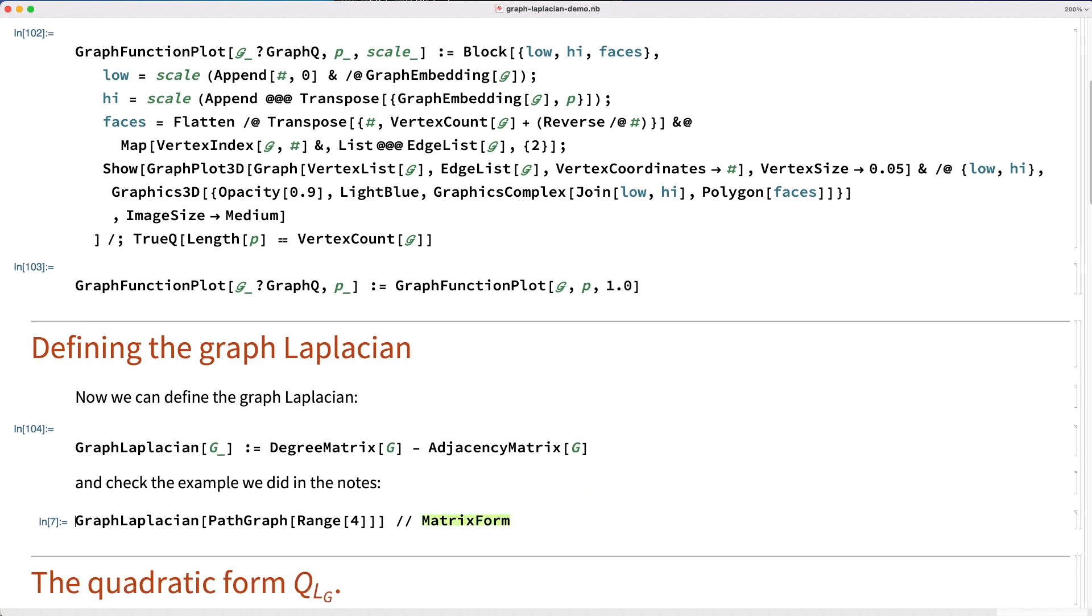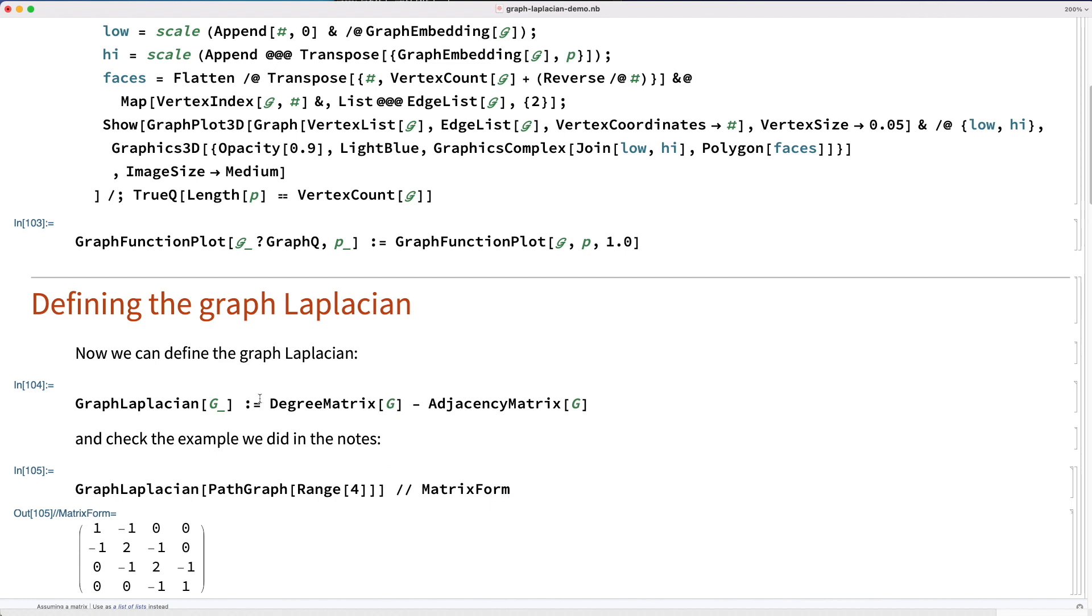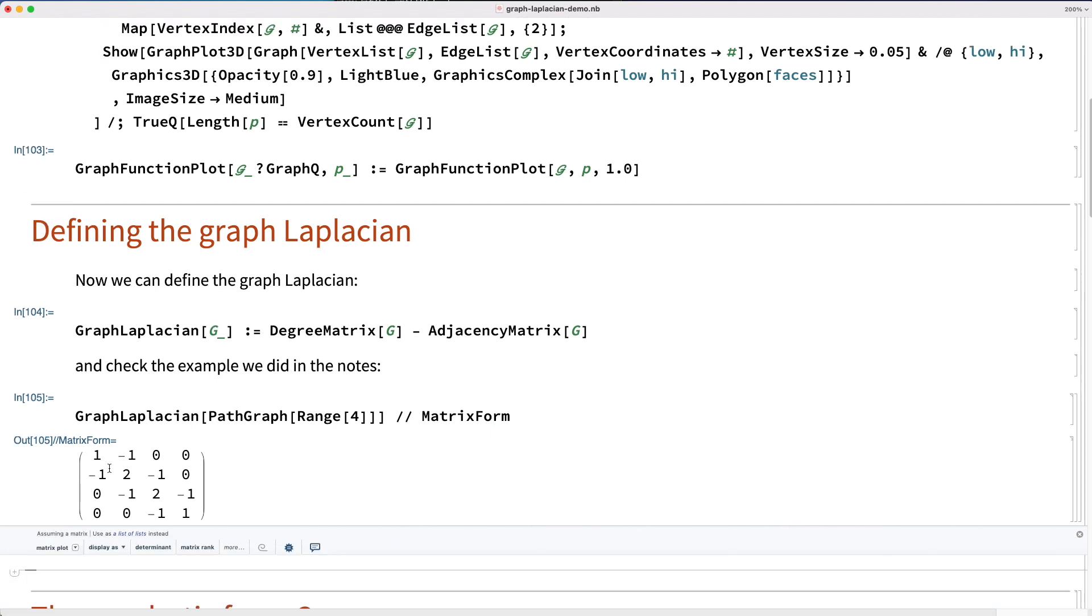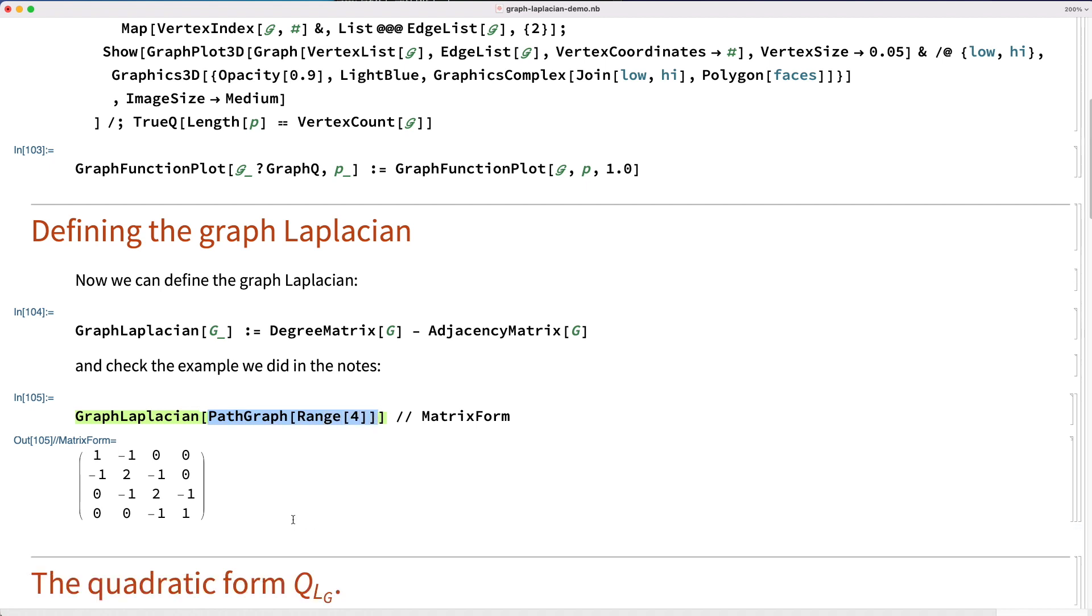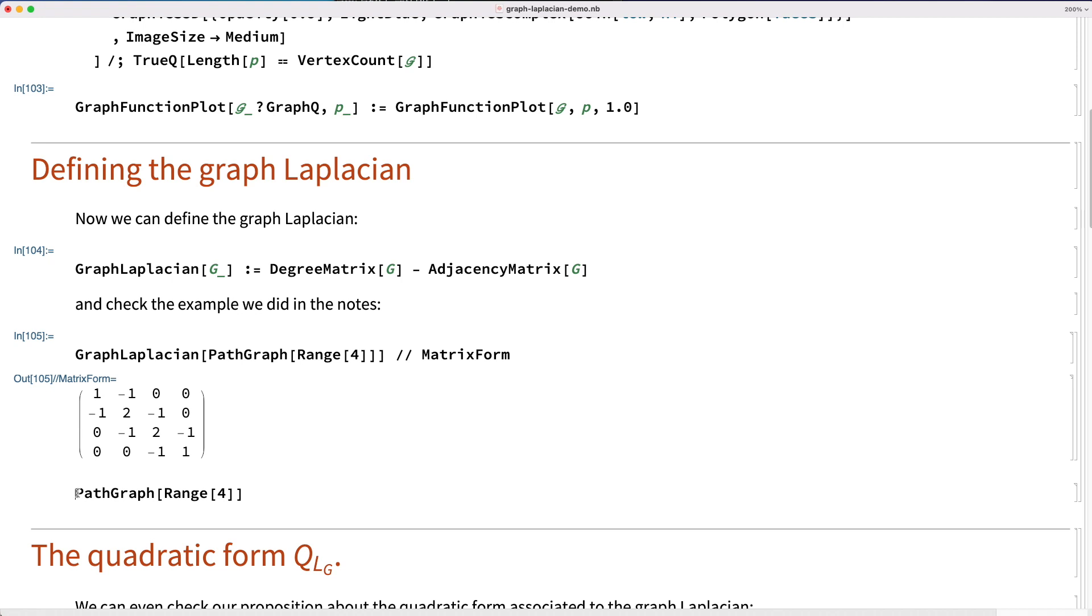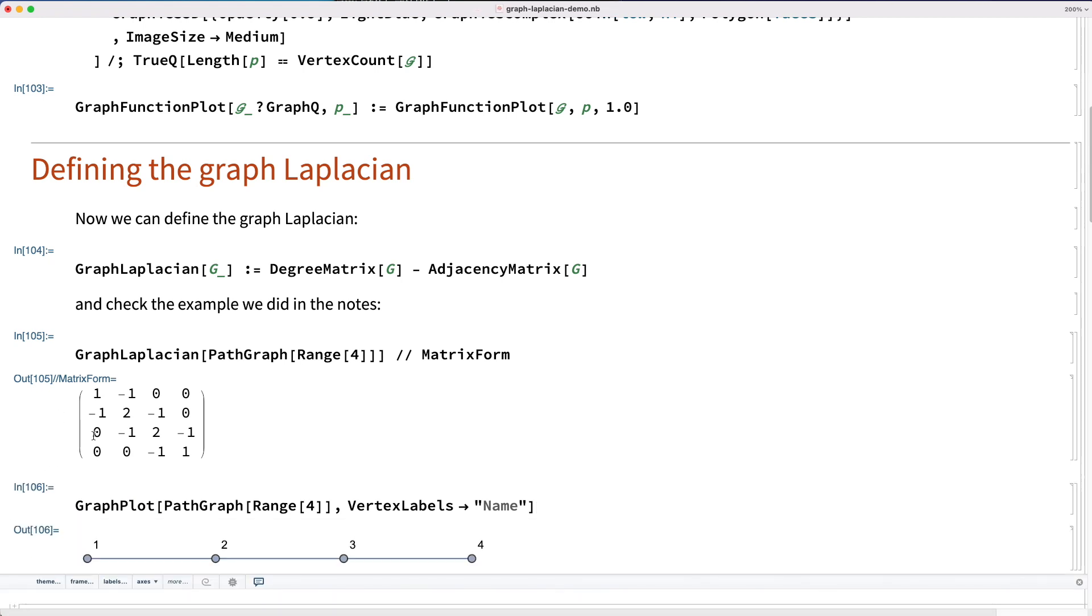So to look at our examples, here's the path graph, and we see that along the diagonal we have a vertex of degree 1, 2, 2, and 1. Off the diagonal we have negative 1's where there are edges connecting the vertices of the path graph. We can see that the numbering of the vertices is indeed 1, 2, 3, 4.